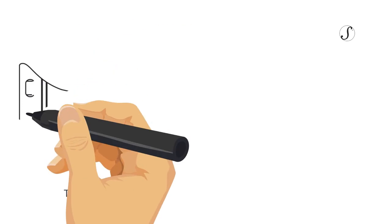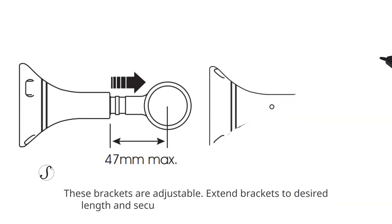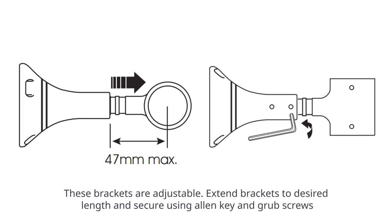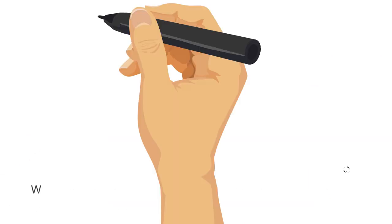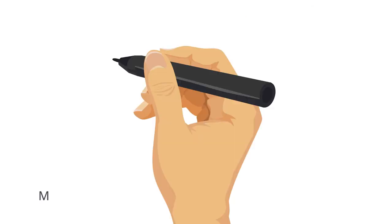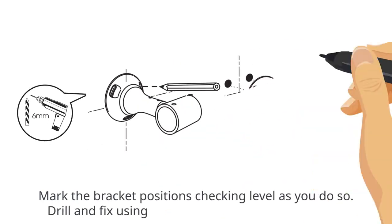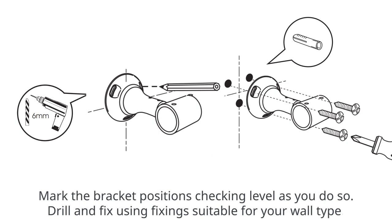Hanging brackets. These brackets are adjustable. Extend brackets to desired length and secure using allen key and grub screws. With brackets showing two mounting holes and grub screw holes at the top and one mount hole at the bottom, mark the bracket positions checking level as you do so. Drill and fix using fixing suitable for your wall type.